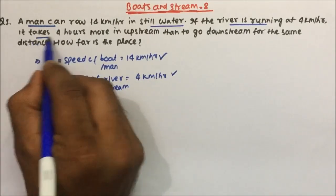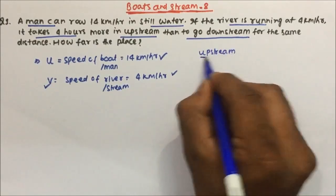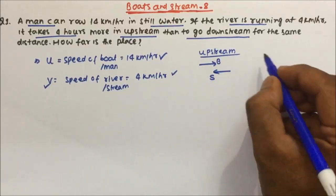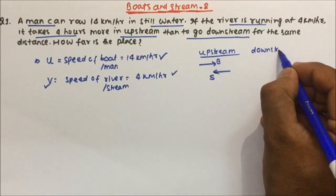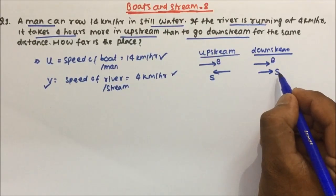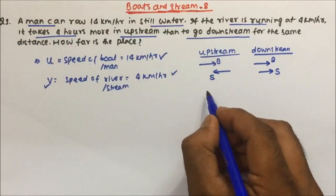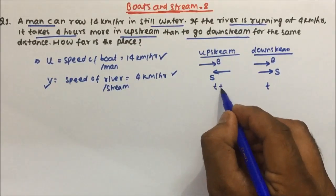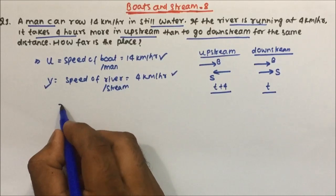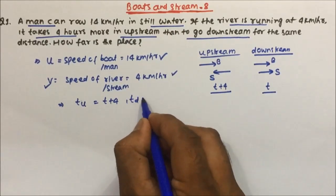Now what they are telling is it takes 4 hours more in upstream than to go downstream. Upstream means the boat is moving against the river — their directions are different. If the boat is moving in one direction, the stream moves in the opposite direction. In downstream, boat and stream are in the same direction. Since upstream takes more time, I can write: time in upstream is t plus 4, and time in downstream is t.